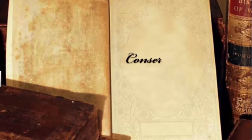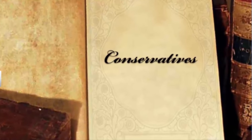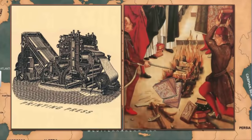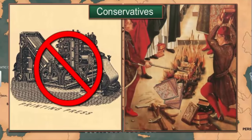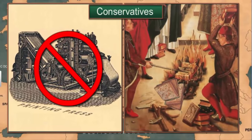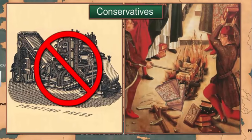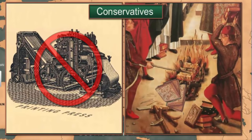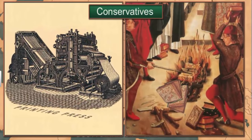The conservative regimes set up through the Treaty of Vienna in 1815 were autocratic in nature. They tried to curb the freedom of expression and imposed censorship laws on newspapers, books, plays, and songs as they championed freedom. Let's now find out the reaction of the liberals to conservatism.